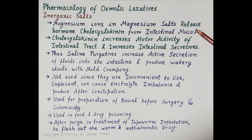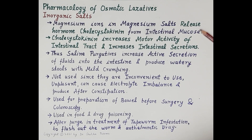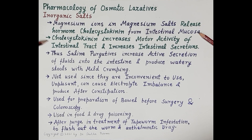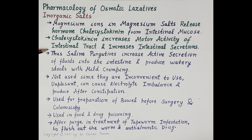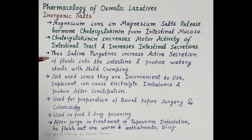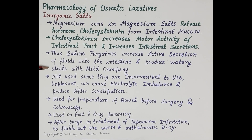As discussed, magnesium ions in magnesium salts release the hormone cholecystokinin from the intestinal mucosa. Cholecystokinin increases motor activity and peristalsis of the intestinal tract and increases intestinal secretions. Thus saline purgatives increase active secretion of fluids into the intestine, produce watery stools, and also cause mild cramping.